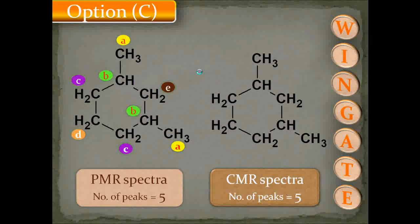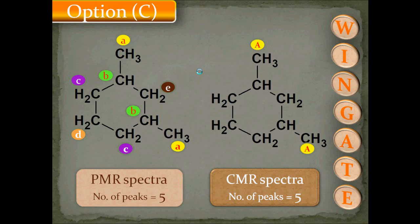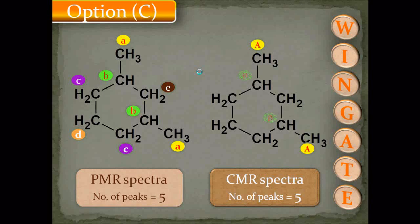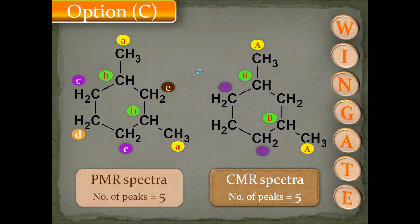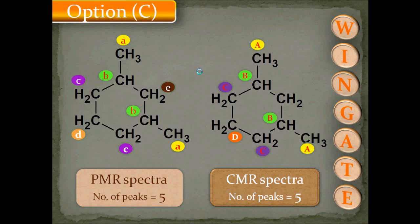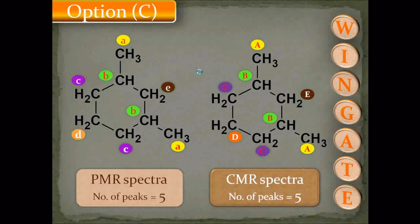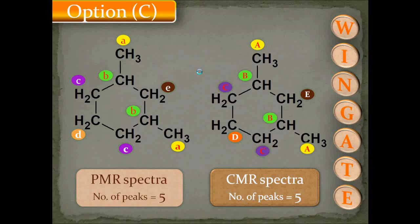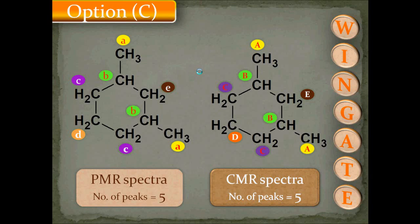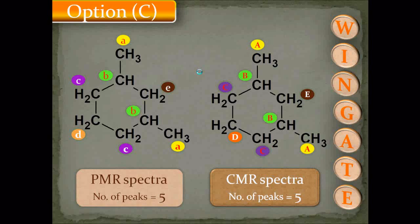The CMR spectra for 1,3-dimethylcyclohexane also shows 5 peaks: carbon A is in the side chain, carbon B is attached to the side chain, carbon C is ortho to the side chain, carbon D is meta to the side chain, and carbon E is ortho but positioned between the side chains — total 5 CMR signals. Since the question requires 4 peaks for both, option C is false.